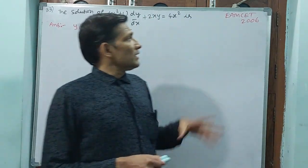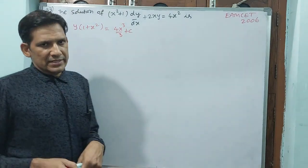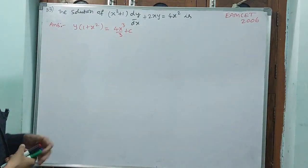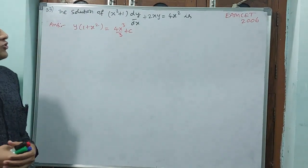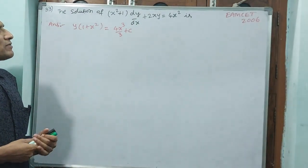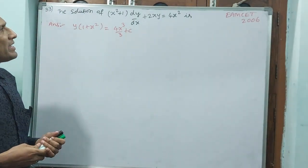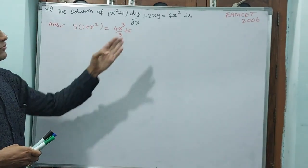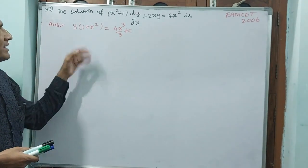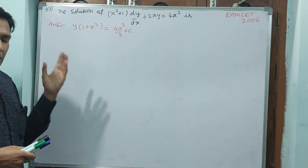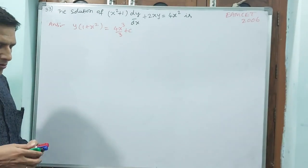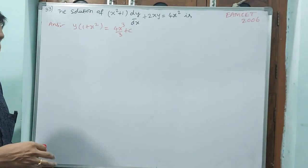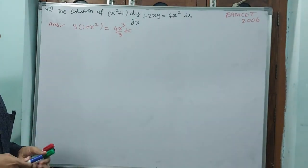This question is asked in M-set 2006. The solution of x squared plus 1 times dy by dx plus 2xy equals 4x squared is what? The answer I have written. Let us try to solve this question.